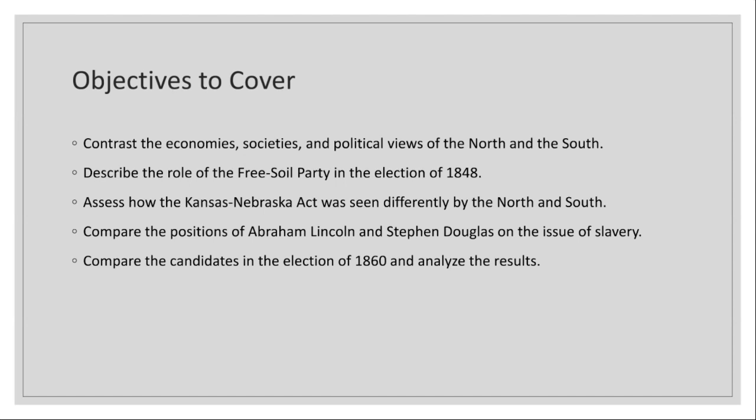We will then move on to the role of the Free Soil Party in the election of 1848. In 1848, this political party emerged as a voice against the extension of slavery. Led by figures like Martin Van Buren, the Free Soil Party advocated for "free soil, free labor, free men," opposing the spread of slavery into Western territories acquired after the Mexican-American War. Although they didn't win the election, their impact was significant, particularly in the North, laying the groundwork for future anti-slavery political movements.